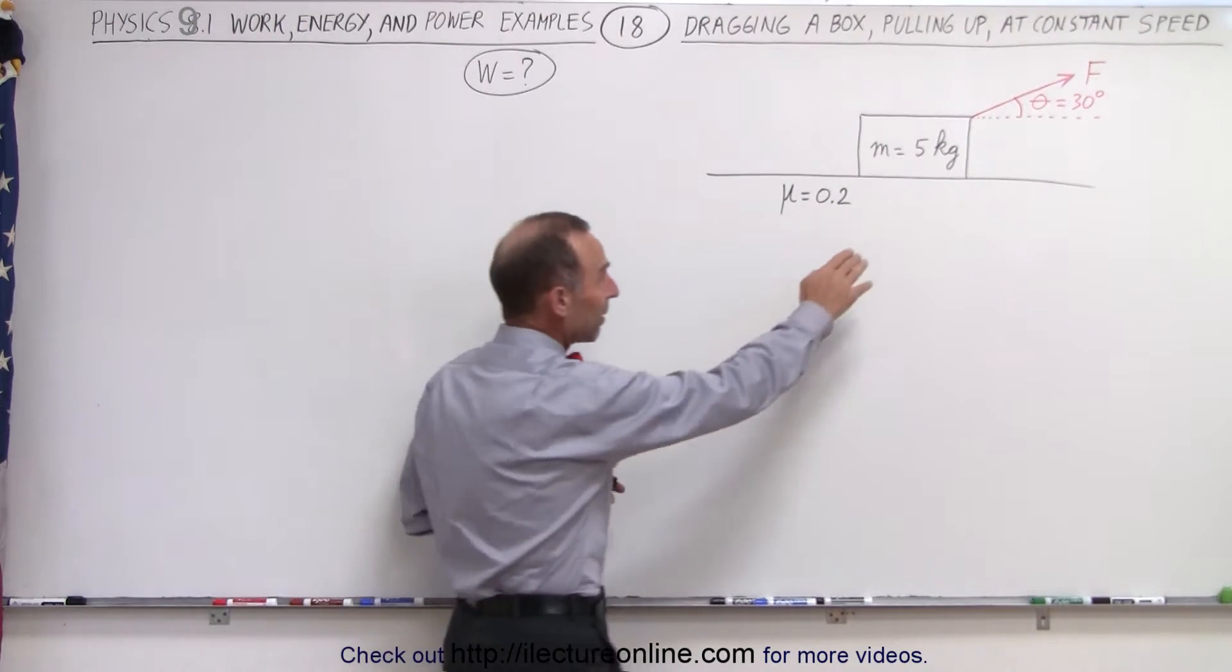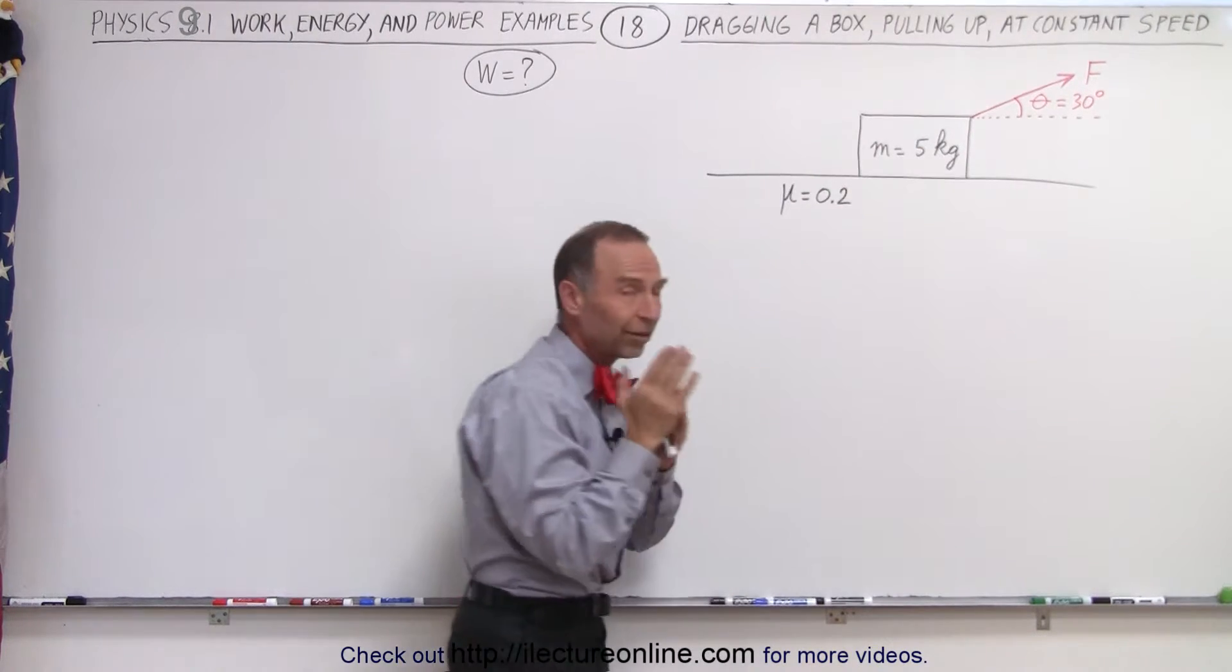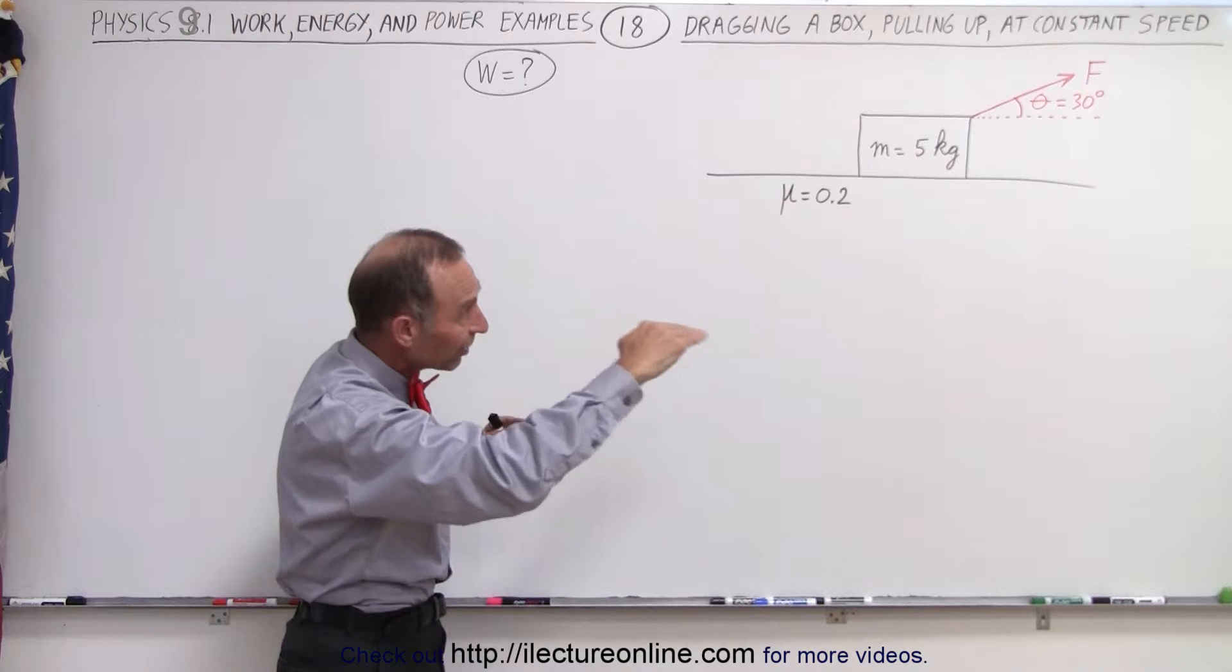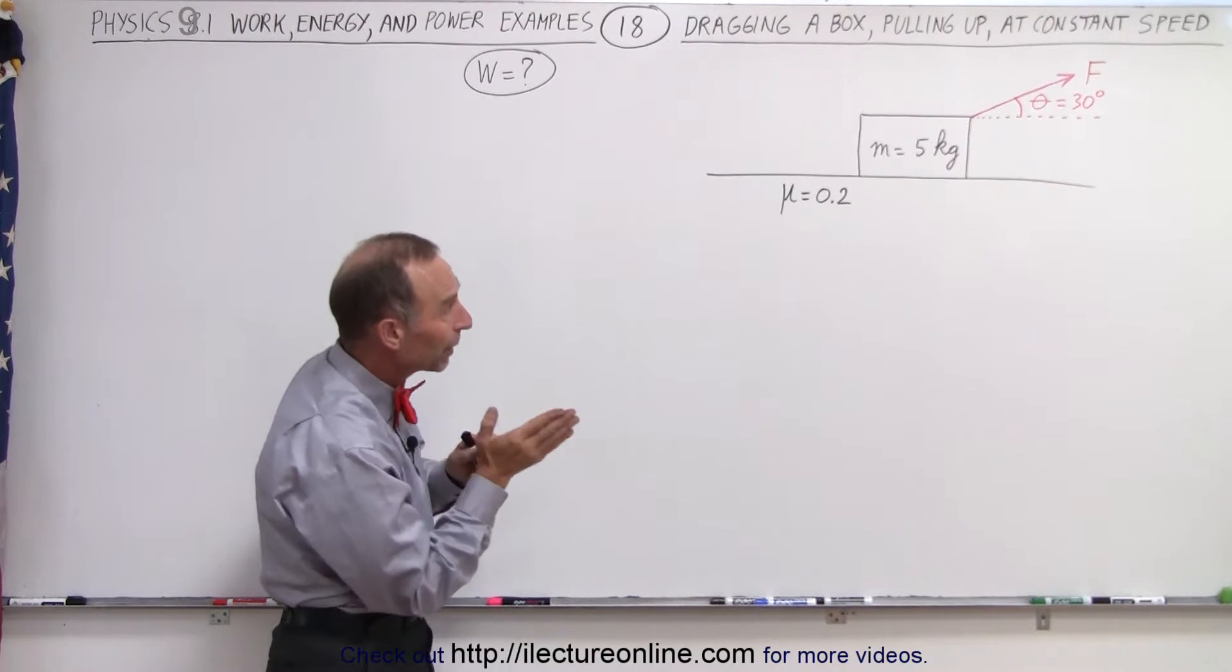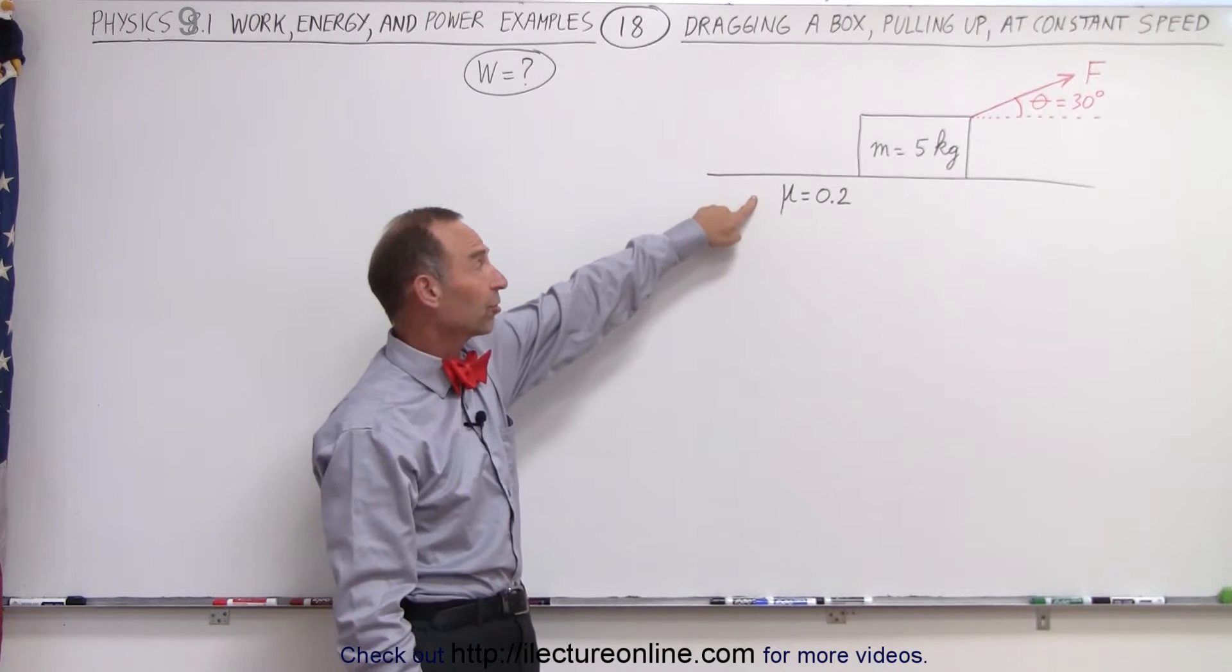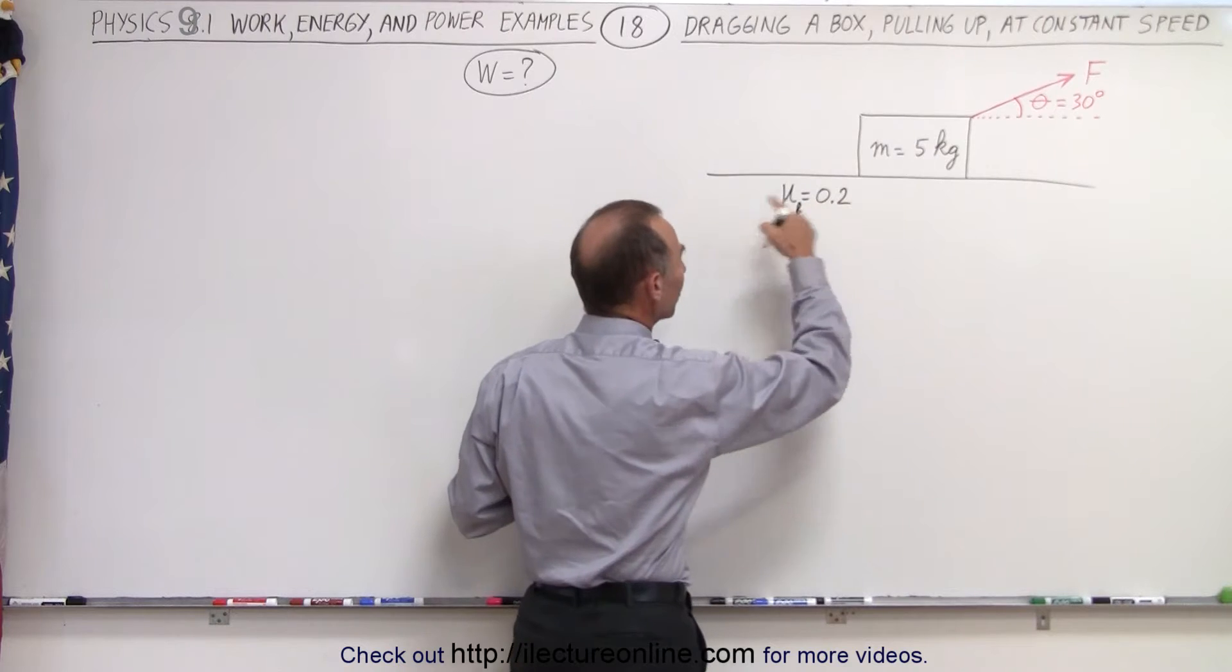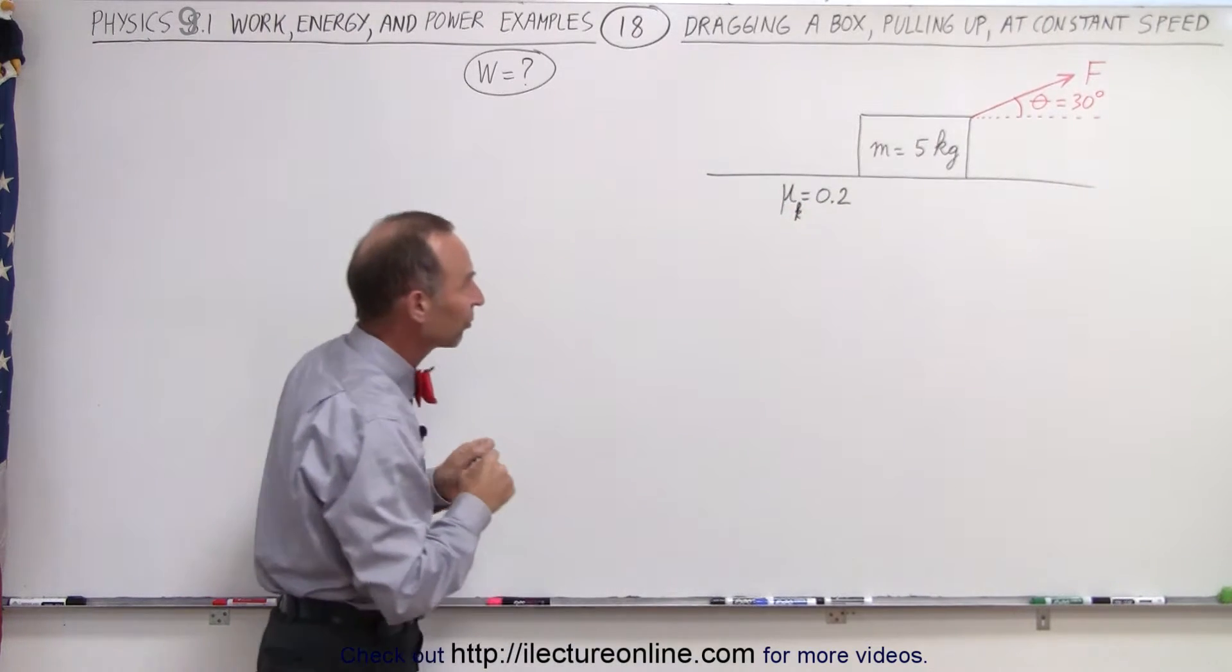We have a 5 kilogram mass being dragged across the floor at a constant speed. Notice that the force is not directed horizontally or parallel to the floor, but at an angle of 30 degrees above the horizontal. There's a coefficient of friction of 0.2, and let's assume that this is kinetic friction since we are dragging the box across the floor.